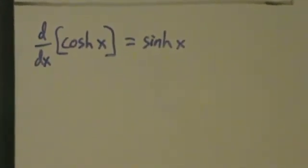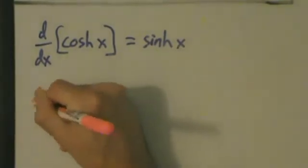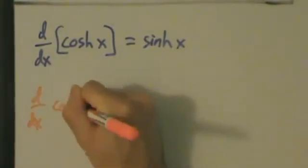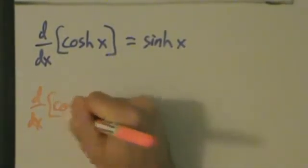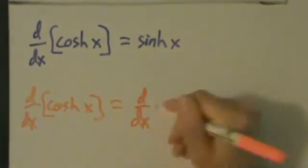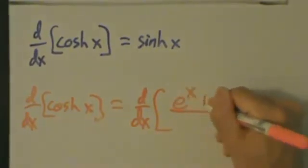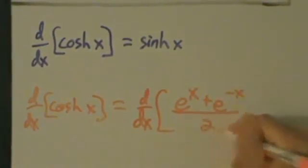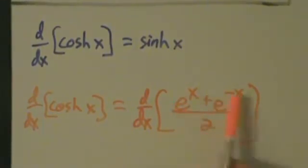So let's go ahead and work this out. d/dx of cosh x equals d/dx of e to the x plus e to the negative x all over 2. Because that's what cosh x is, the hyperbolic cosine of x is defined to be this right here.